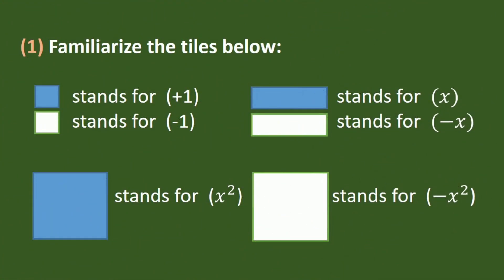Let us familiarize the tiles. The blue square tile stands for positive 1. The white square tile stands for negative 1. The blue rectangle tile stands for positive x. The white rectangle tile stands for negative x. The big blue square tile stands for positive x squared. We will be using these in our operations.